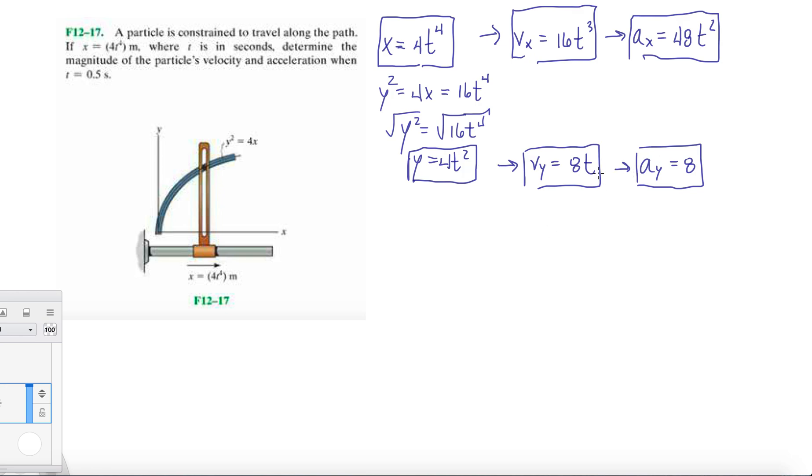We're determining the magnitude of the particle's velocity and acceleration when t equals 0.5 seconds. So we're basically trying to calculate v_x at 0.5 seconds and a_x at 0.5 seconds. v_x at 0.5 seconds gives you 2 meters per second.